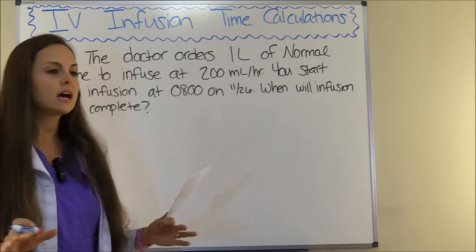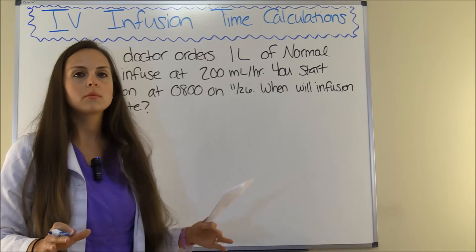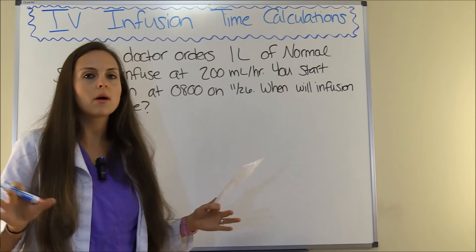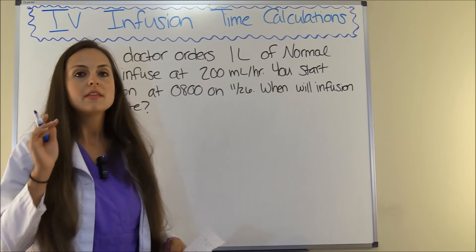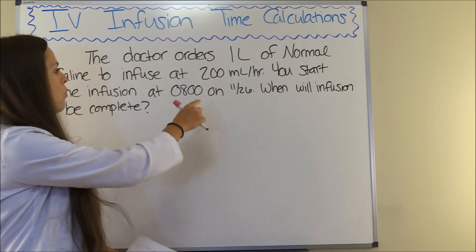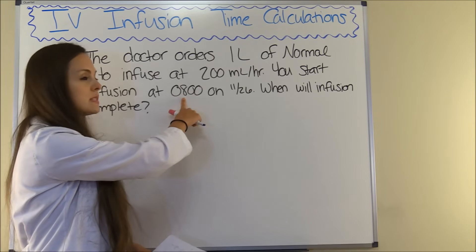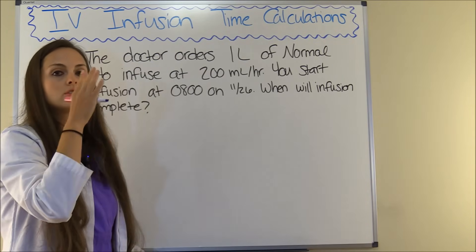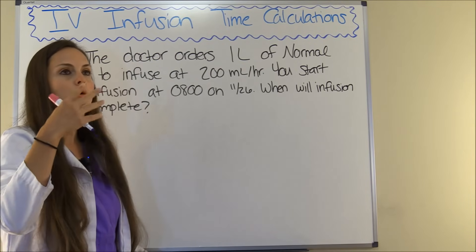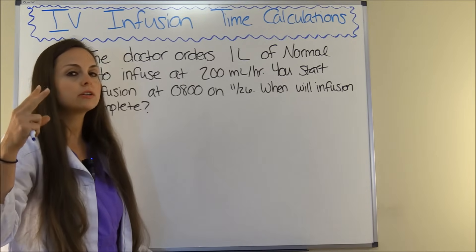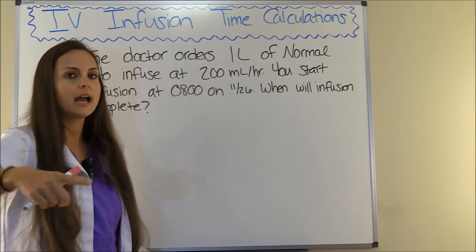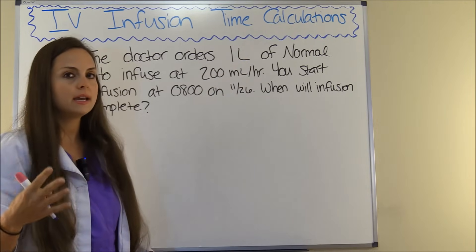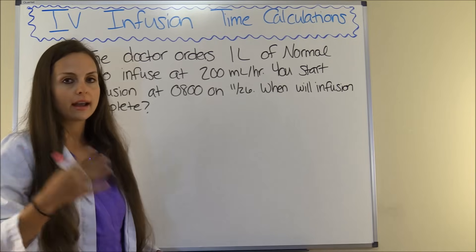Anytime you read a dosage and calculations problem, you need to ask yourself what is this problem wanting to know, because every type of problem wants to know something different. This problem wants to know when, from the time we started this one liter bag of normal saline running at 200 milliliters per hour — so the patient's going to receive 200 milliliters every hour — when would this bag be empty? We started at 8 o'clock.